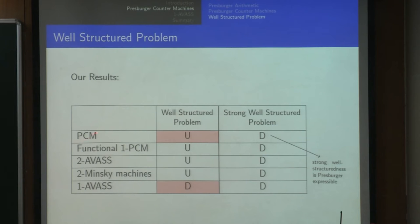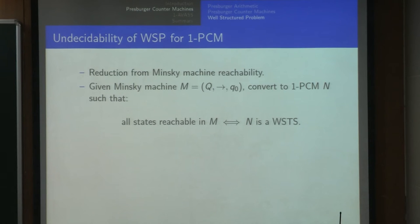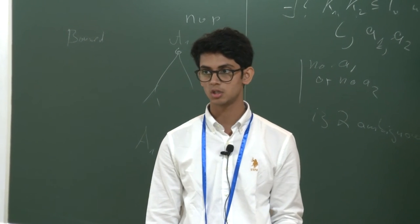We look at this result: given a one-counter PCM with Pressburger transitions, we show undecidability. The reduction goes from Minsky machine reachability. Given a Minsky machine, we construct a one-counter PCM such that it is well-structured if and only if all states are reachable in the Minsky machine.